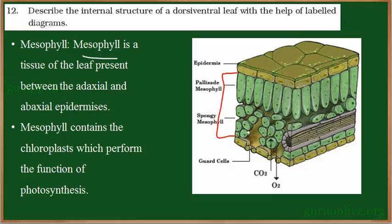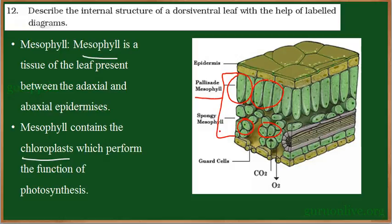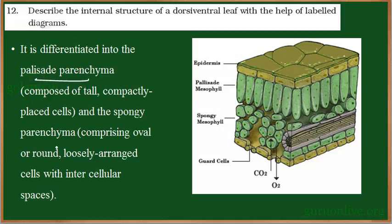Mesophyll contains different types of cells with chloroplast within them — a type of parenchyma cell with chloroplast, generally called chlorenchyma. This chlorenchyma is divided into two types. Some cells are parallelly arranged to one another; these are called palisade parenchyma. Just below that, cells are loosely arranged with a large number of air cavities; this is called spongy parenchyma. Both are parenchyma cells with chloroplast and are the main cells which undergo photosynthesis.